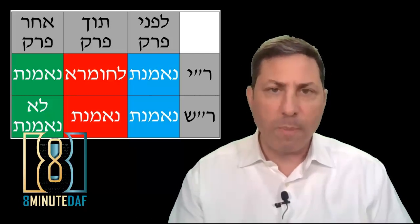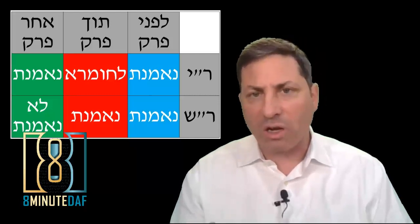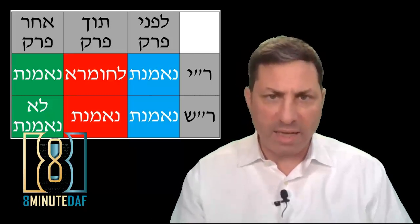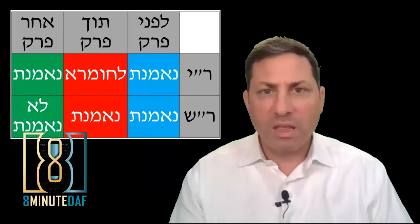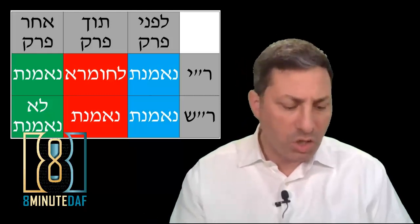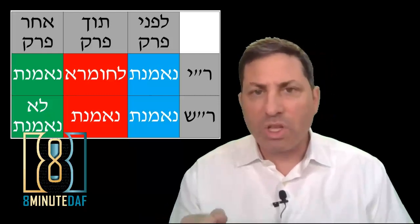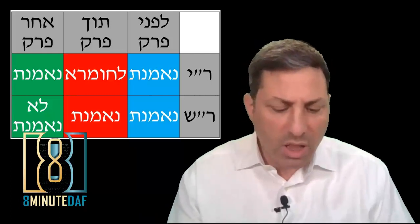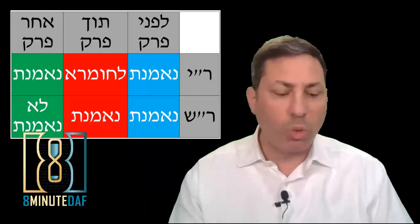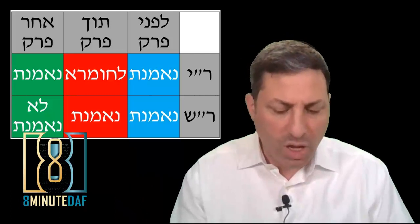After Bas Mitzvah, according to Rebbe Yehuda, a woman is believed. Why? Because there is a Chazakah of Rava that every woman has Simanim when she reaches 12. Therefore, together with the Edus, the Ne'emanus of another woman, she's believed. Rebbe Shimon says, since Rebbe Shimon doesn't hold of the Chazakah of Rava, therefore after Bas Mitzvah, a woman is not believed to say that a girl has Simanim.